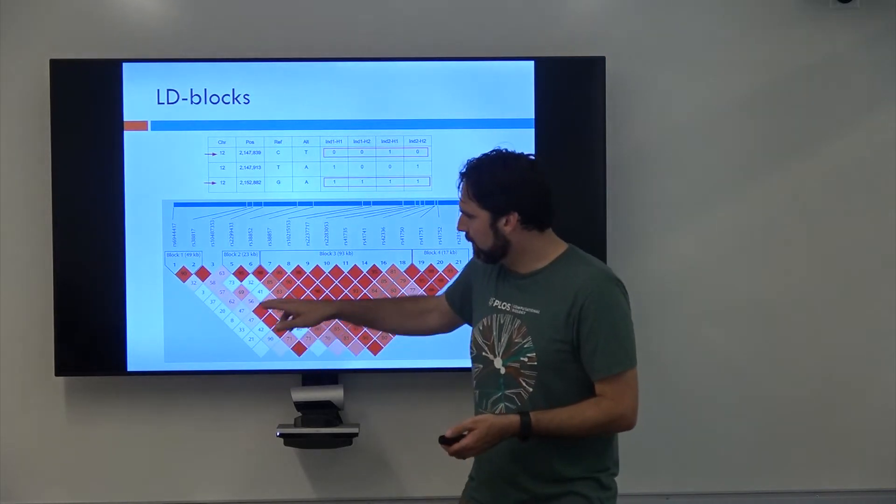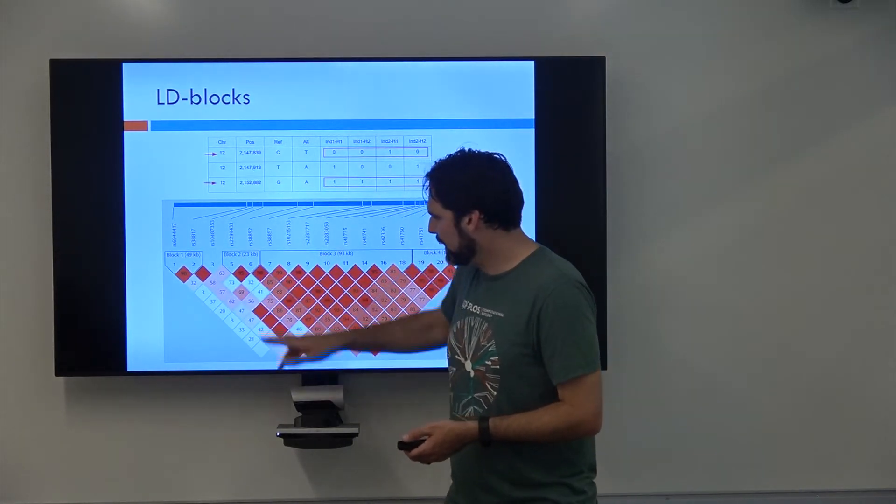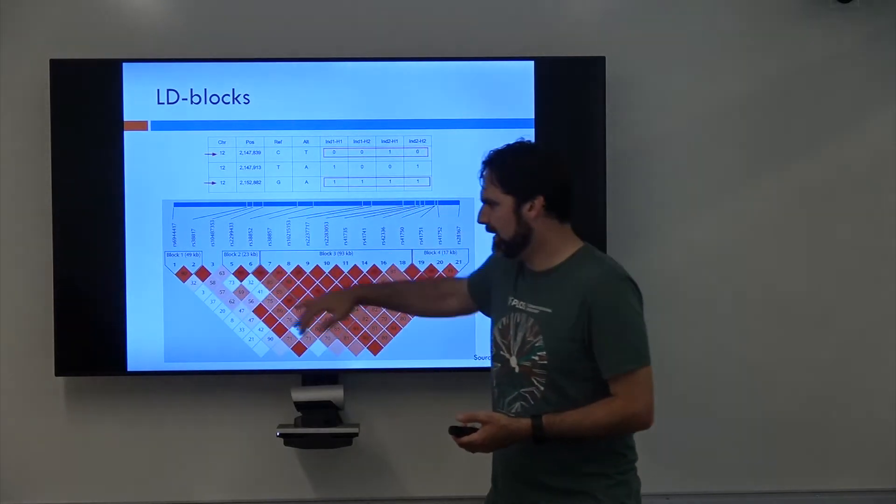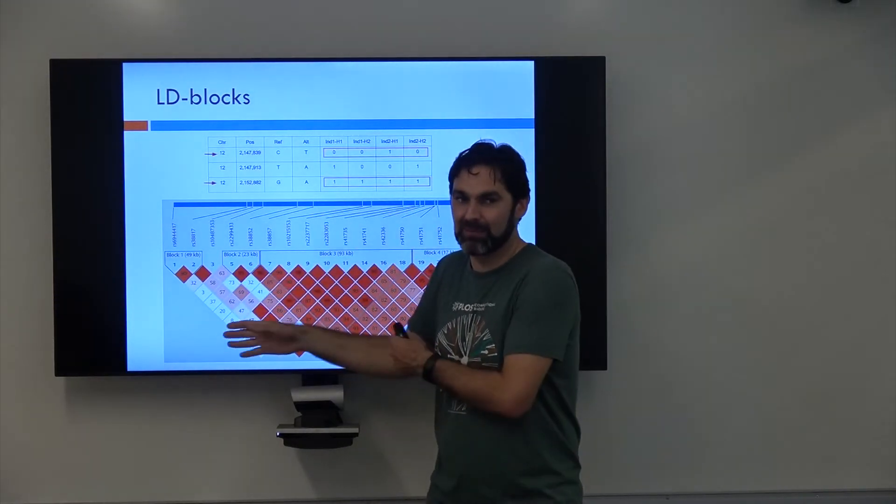It turns out there's certain parts of the genome that love having recombinations occur. And a lot of times, if you have... Imagine there was a big red triangle here and a big red triangle here and everything between them was white.